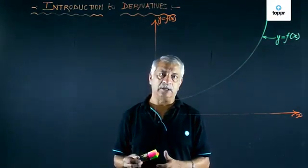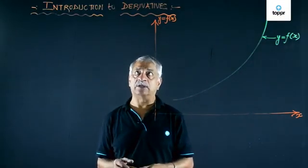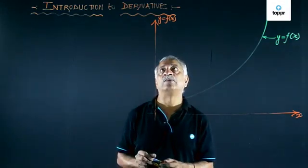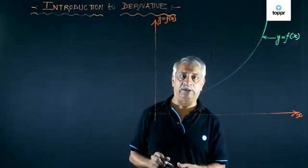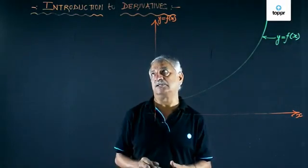In India, around 500 AD, Bhaskara as well as Aryabhatta used the concept of infinitesimal in case of derivatives. They used the infinitesimal to find out distances.